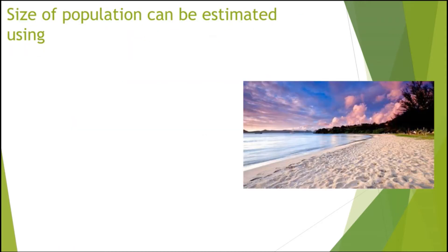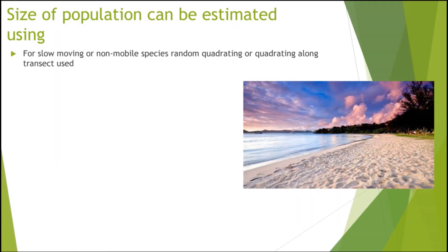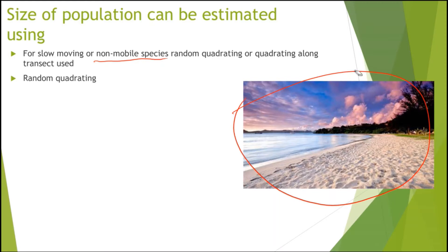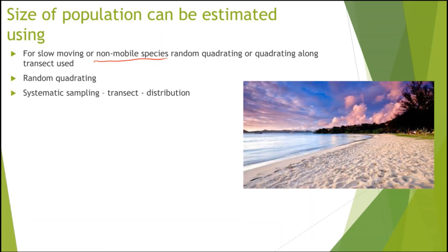The size of a population can be estimated using different methods. For slow-moving or non-mobile species — such as plants or snails — we can use random quadratting or quadratting along a transect. For example, if we're looking at a beach and want to measure the total number of stones or rocks in a certain area, we can use random quadratting to get an estimate of the population.